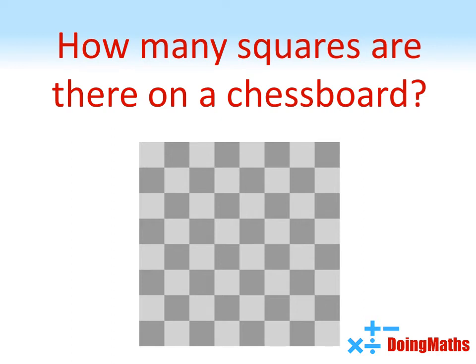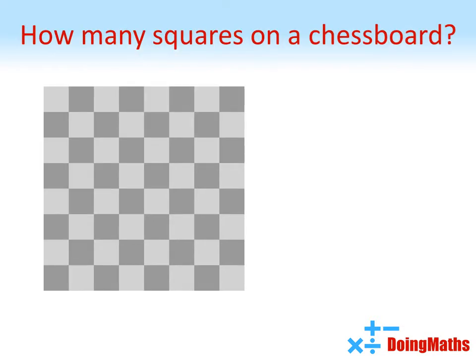How many squares are there on a chessboard? So how many squares are there on a standard chessboard? 64, I hear you say.